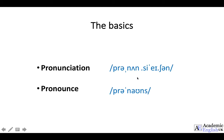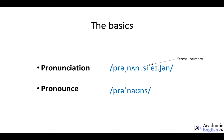An important part about written phonetics is it highlights a couple of other important points. Not only does it show me the difference in vowel sounds, but it also shows me syllables. So this word is five syllables — one, two, three, four, five — and that's highlighted in the phonetics. It also shows me stress: the primary stress, which is on the top, and the secondary stress as well. So I would pronounce this as: pro-NUN-ci-A-tion.